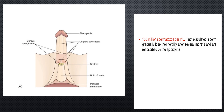The testes can produce about 100 million spermatozoa per milliliter. If not ejaculated, sperms gradually lose fertility over a few months and are then reabsorbed by the body.